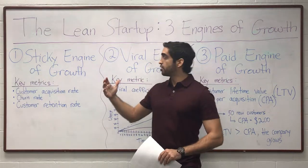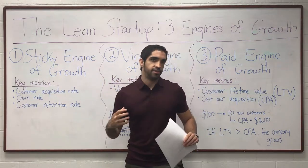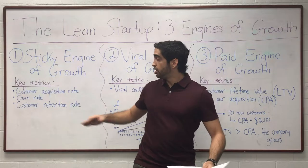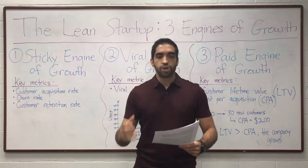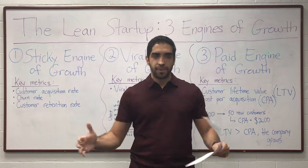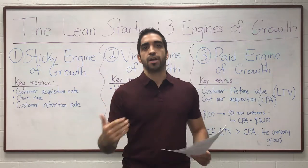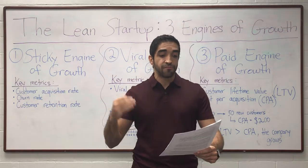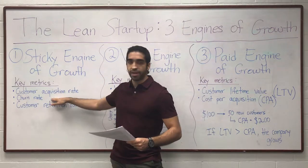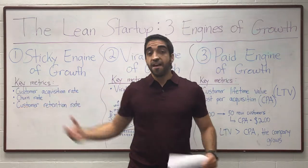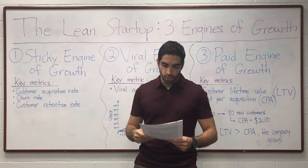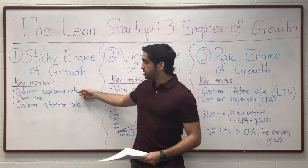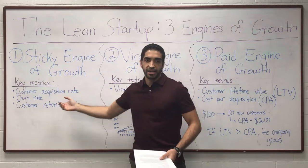The first engine of growth is called the sticky engine of growth. Companies using this engine track their attrition rate or churn rate very carefully. The churn rate is defined as the fraction of customers in any period who fail to remain engaged with the company's product. If the rate of new customer acquisition exceeds the churn rate, the company will grow. The speed of growth is determined by the rate of compounding, which is the customer acquisition rate minus the churn rate.